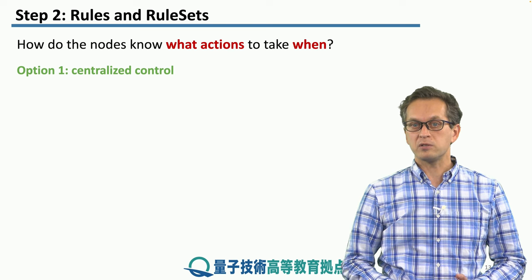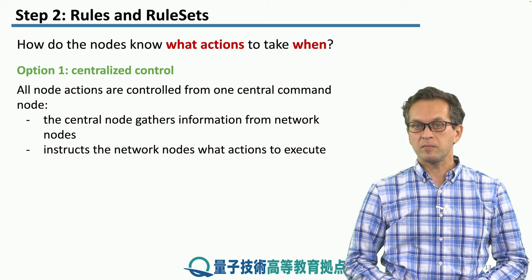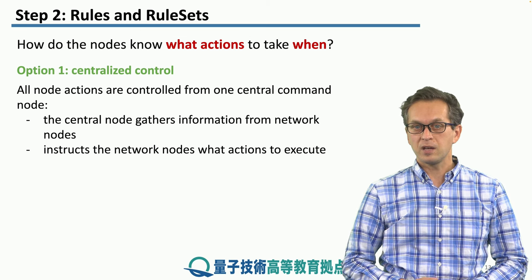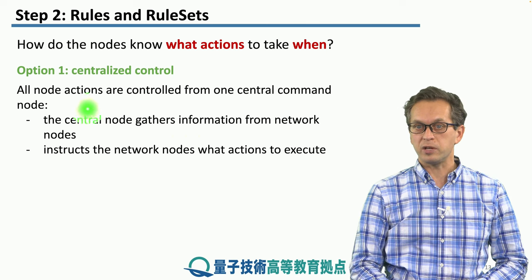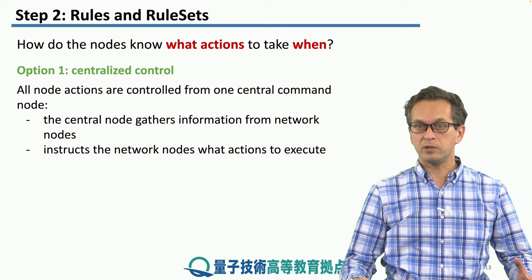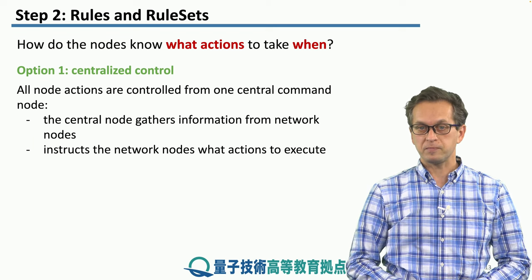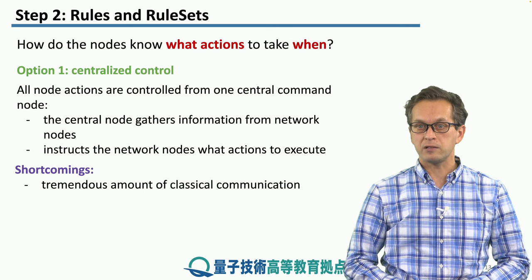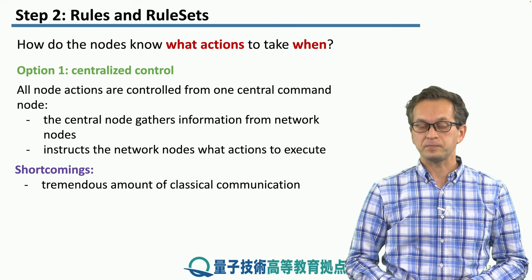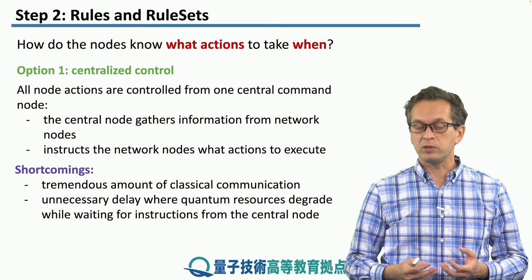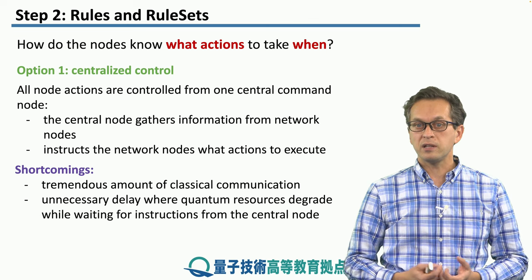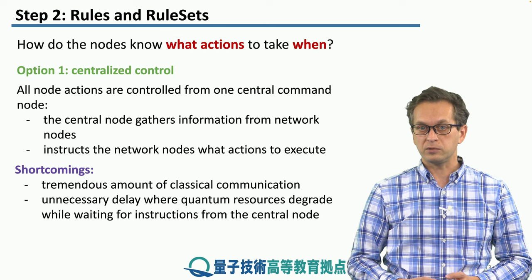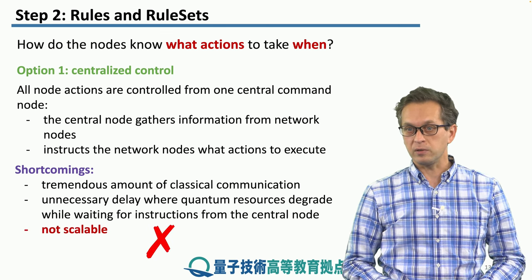Option number 1 is to use centralized control. This is done by having a central node that coordinates all of the actions of other nodes inside the network. The central node gathers information from network nodes, creates instructions which are then distributed to the nodes, and then they perform the corresponding actions. Of course, there are immediate shortcomings. The first is the tremendous amount of classical communication that constantly has to go back and forth between the nodes and the central node. Also, while the central node is gathering information and creating instructions, there's an unnecessary delay where quantum resources are degrading due to decoherence. So clearly, this approach is not very scalable and not very good for us.